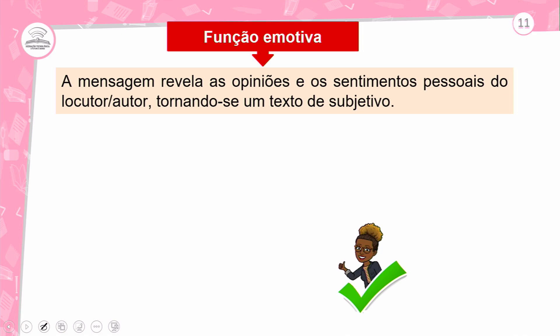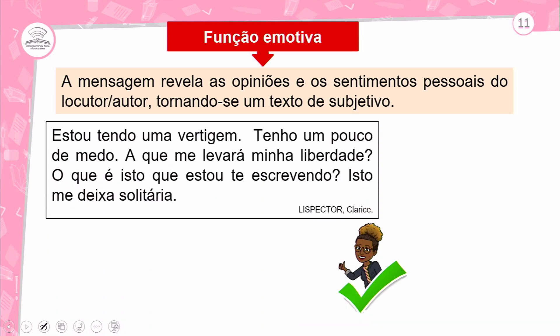Exemplo de Clarice Lispector: 'Estou tendo um vestígio, tenho um pouco de medo, o que me levaram à minha liberdade. Isto me deixa solitária.' Quando falamos de subjetivismo, vemos a presença marcada da primeira pessoa: o uso do verbo na primeira pessoa e a identificação de pronomes como 'me' e 'minha'. 'Estou' — já sabemos que é o eu.